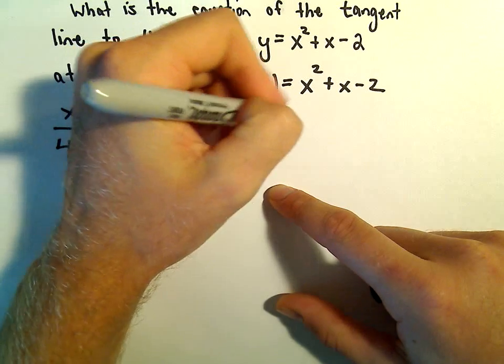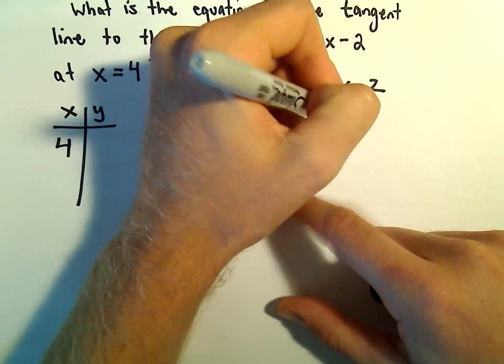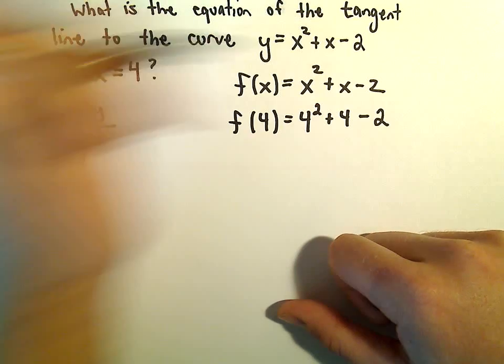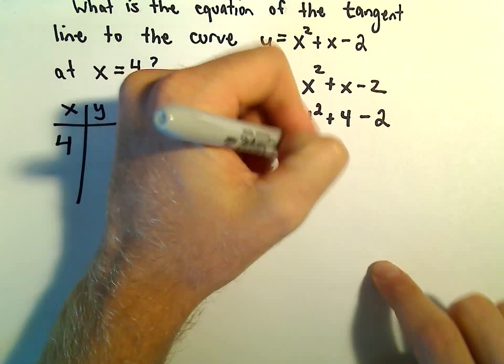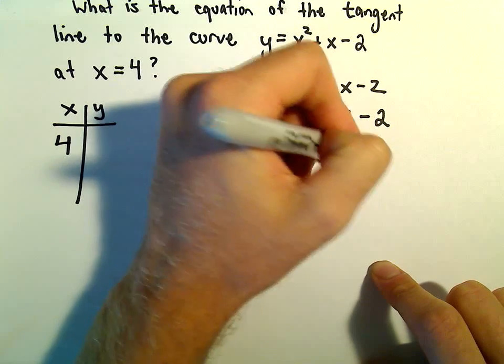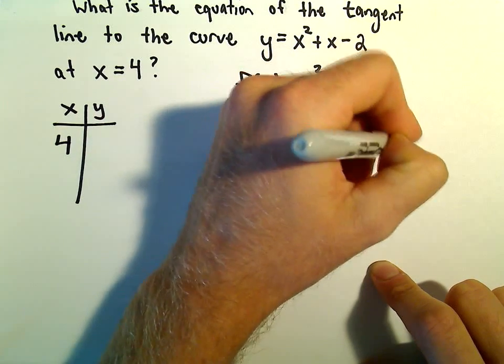So we'll have f of 4, which is going to be 4 squared plus 4 minus 2. Let's see, 4 squared is 16, 16 plus 4 is going to be 20, and then we can subtract 2, and that will give us 18.